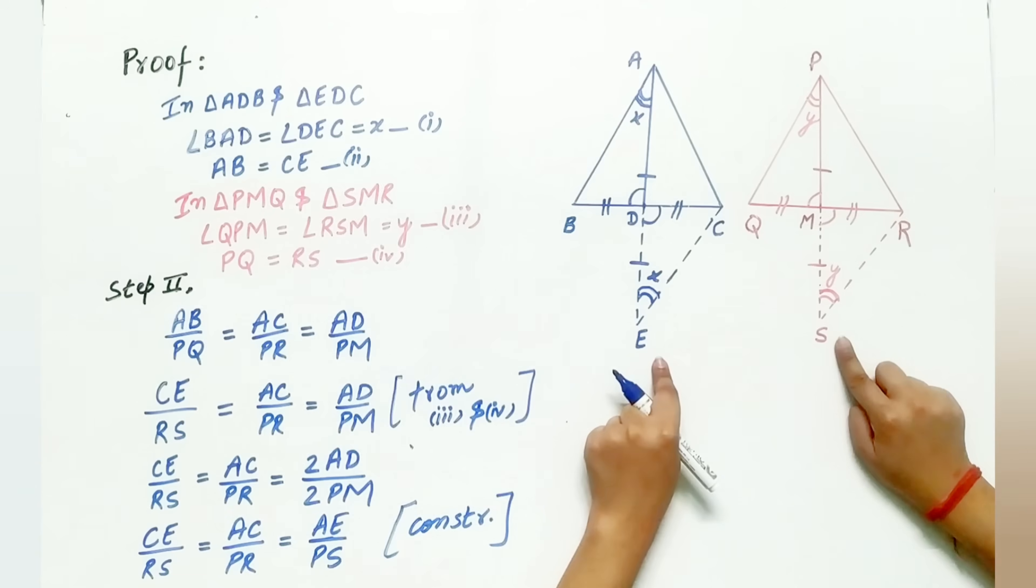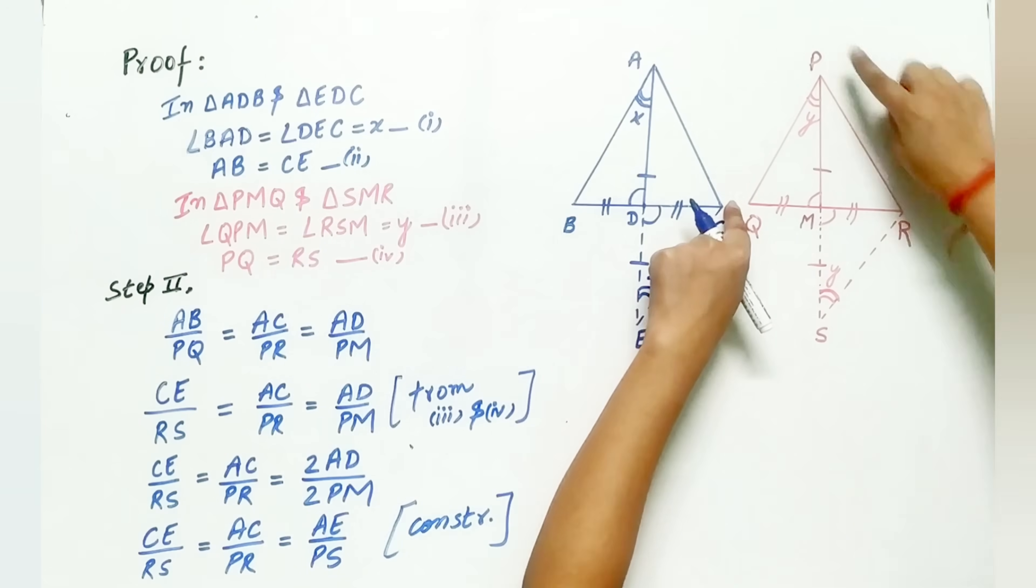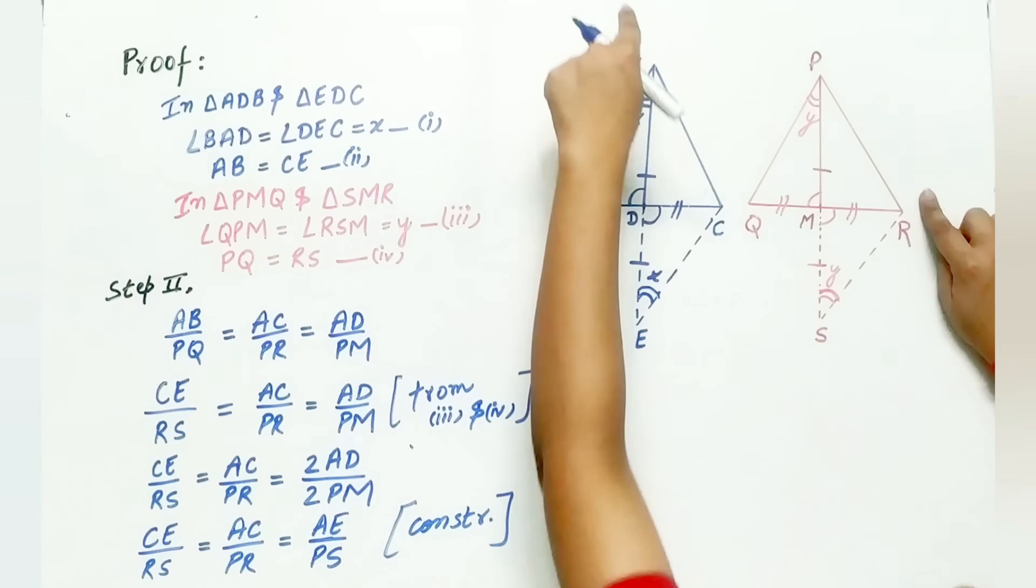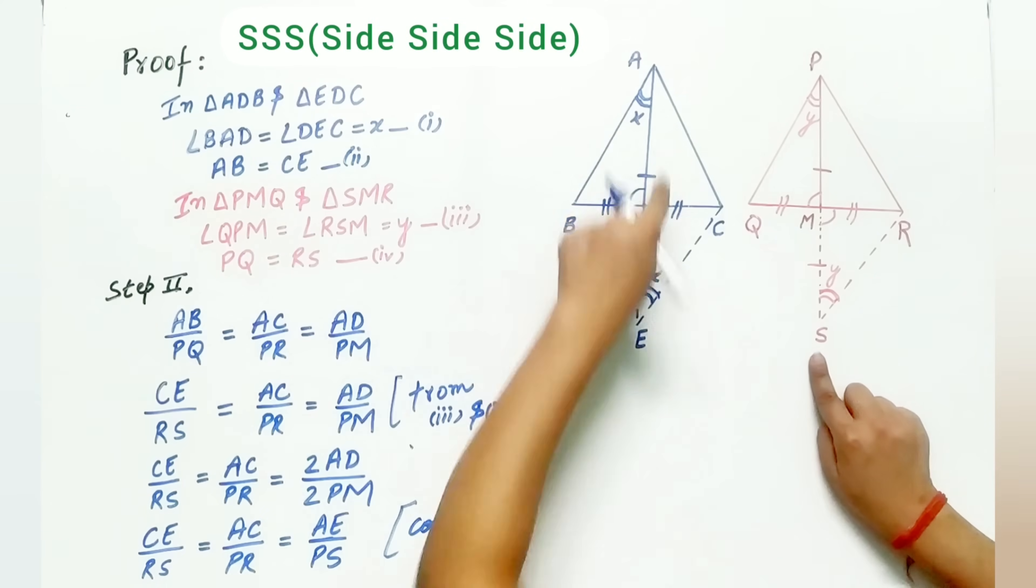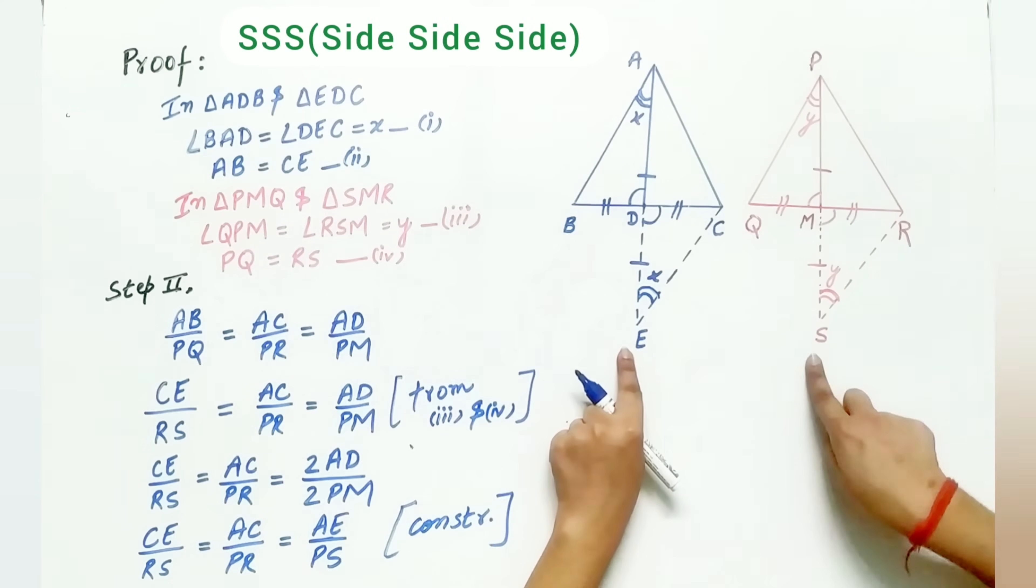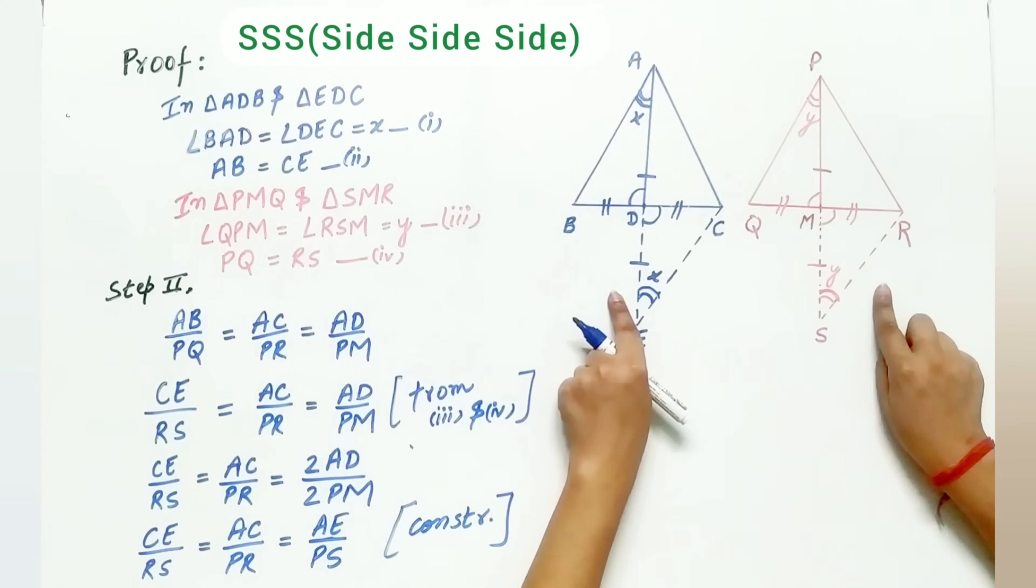CE by RS is equal to AC by PR is equal to AE by PS. Hence, by SSS, both the triangles are similar.